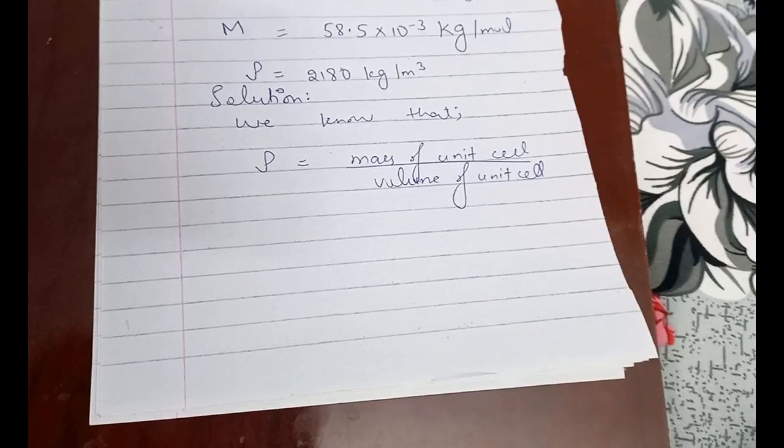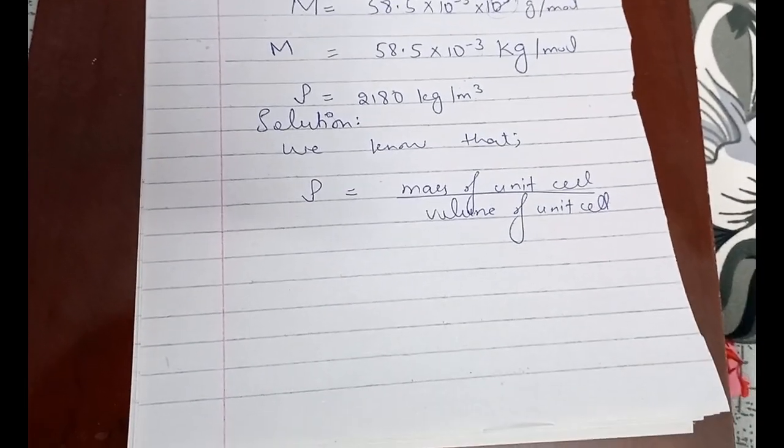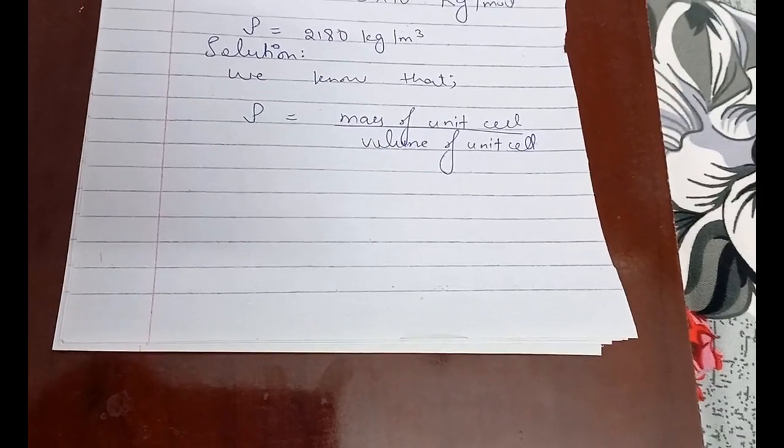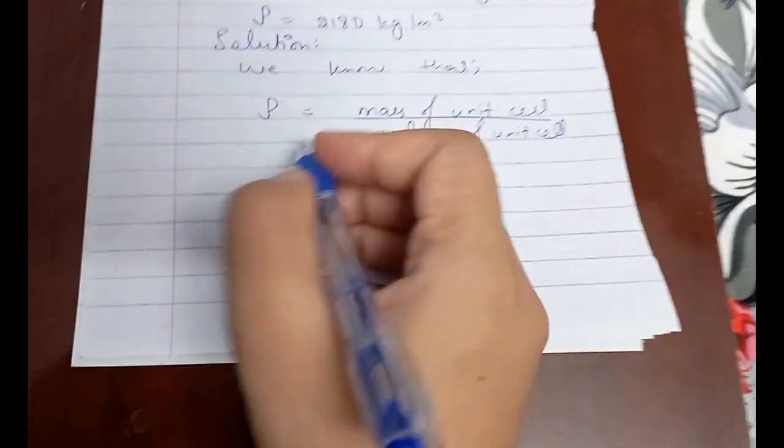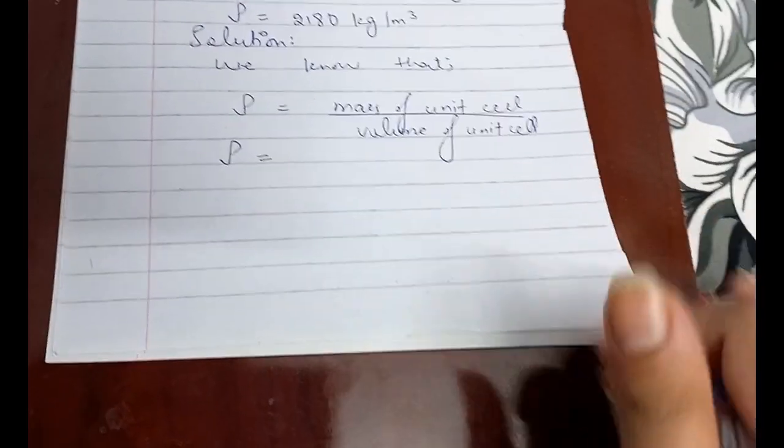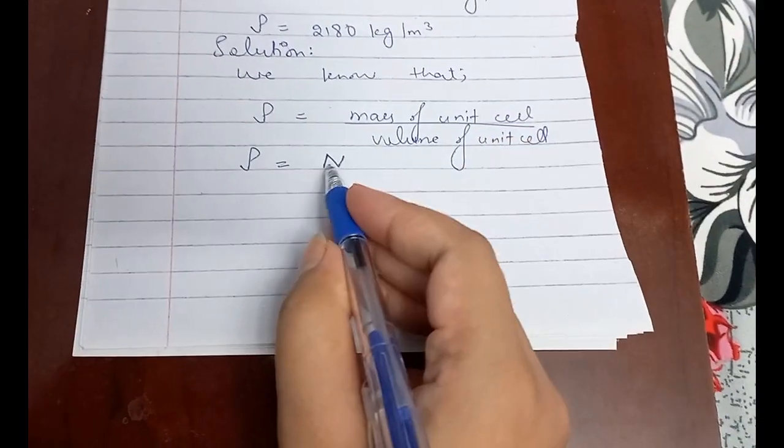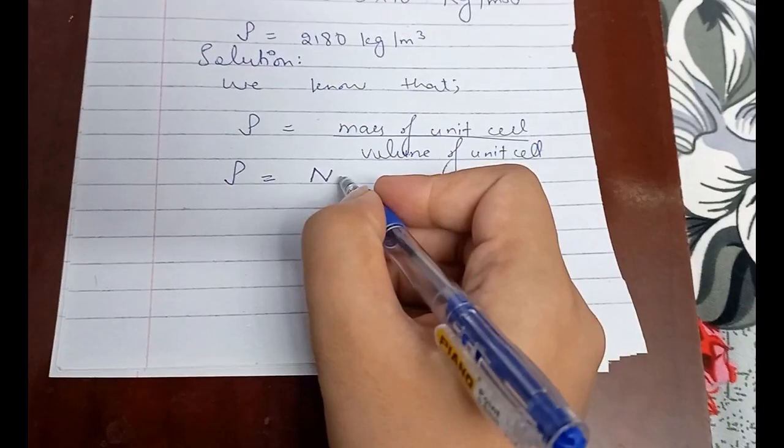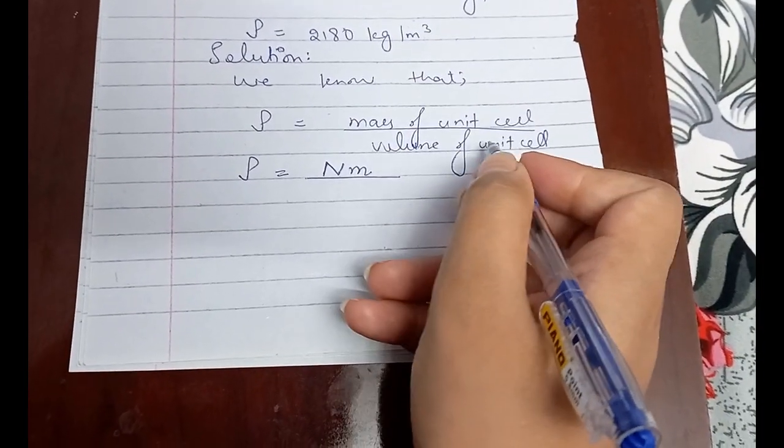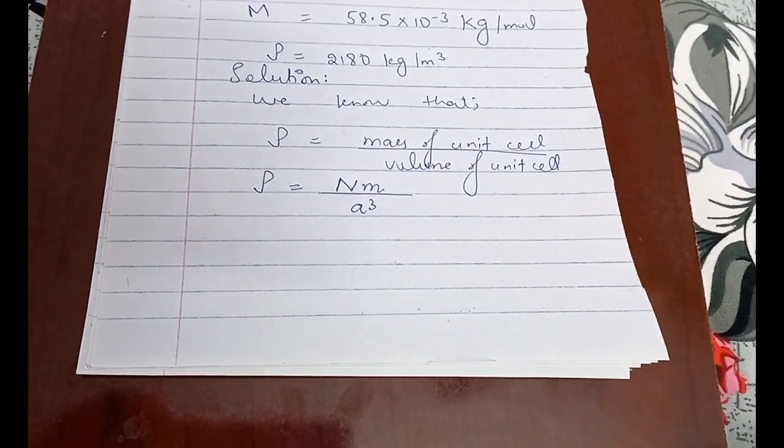We have rock salt crystal and it is cubic in nature. To be specific it is FCC in shape, but it's important to know that it's cubic right now because its FCC nature doesn't matter here in the question. Mass of unit cell equals the number of atoms per unit cell multiplied by mass of each atom divided by the volume of unit cell, which is a cube because it's cubic.